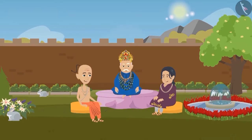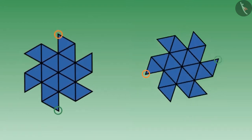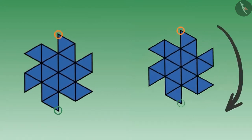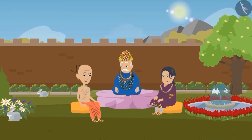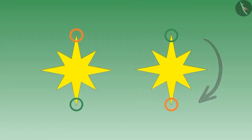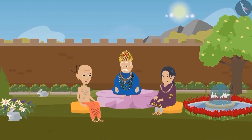The king was very happy with Tenali Raman's cleverness. Tenali Raman said: your highness, take this and rotate it by half. The king exclaimed: wow, Tenali Ramaji, this is interesting! Is there any other object like this? This one also has the same rotational symmetry, your highness.